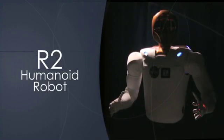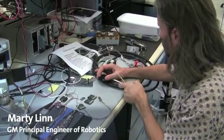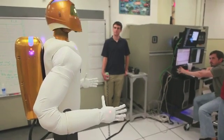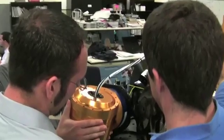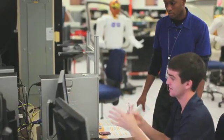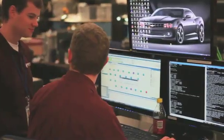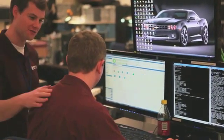The current Robonaut was developed as a result of a partnership between the NASA Johnson Space Center and General Motors. General Motors sent down a team of engineers to work side-by-side with the NASA engineers developing, assembling, designing, and building the current model of Robonaut R2.